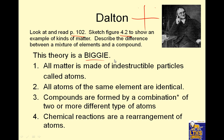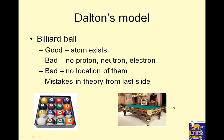Dalton's theory was big. He was able to deduce that matter is made of indestructible particles called atoms, that atoms of the same element were identical, that compounds are formed by combining two or more different types of atoms, and that chemical reactions were rearrangements of those atoms. There's an asterisk here on purpose because Dalton was referring to a chemical combination, as opposed to just mixing two things together.